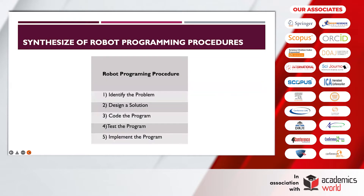The synthesize of the robot programming procedure — we can summarize that there are five steps of robot programming.